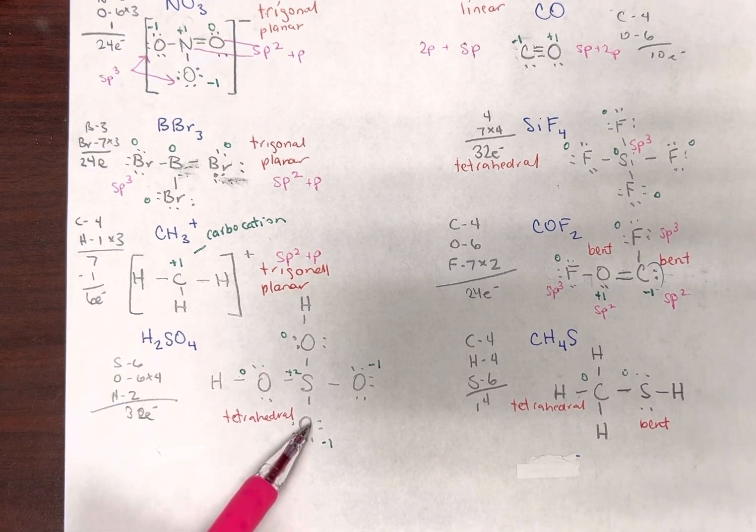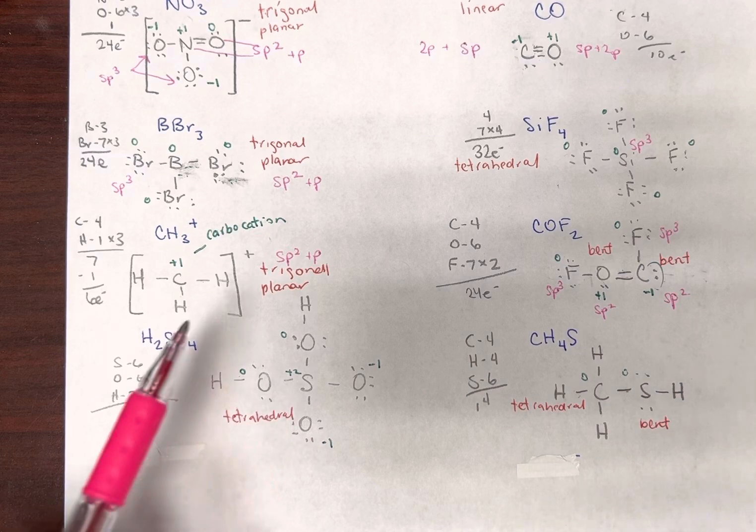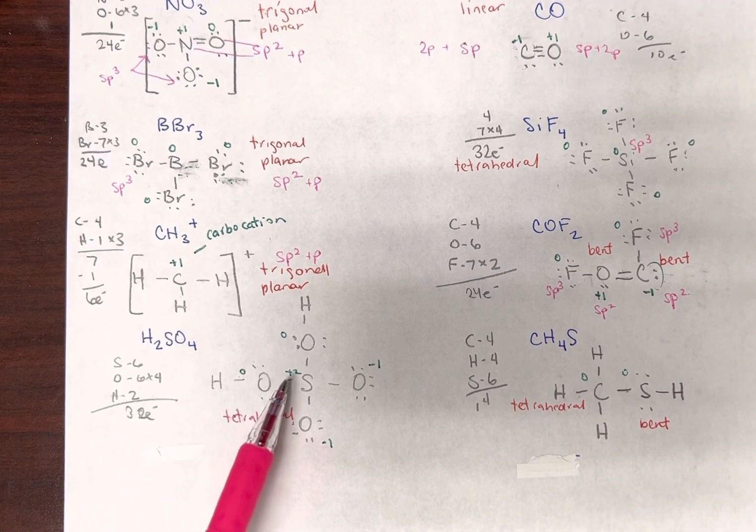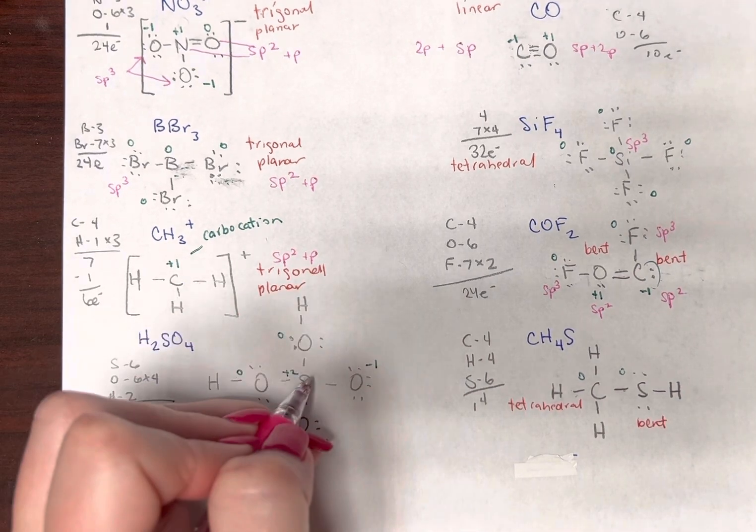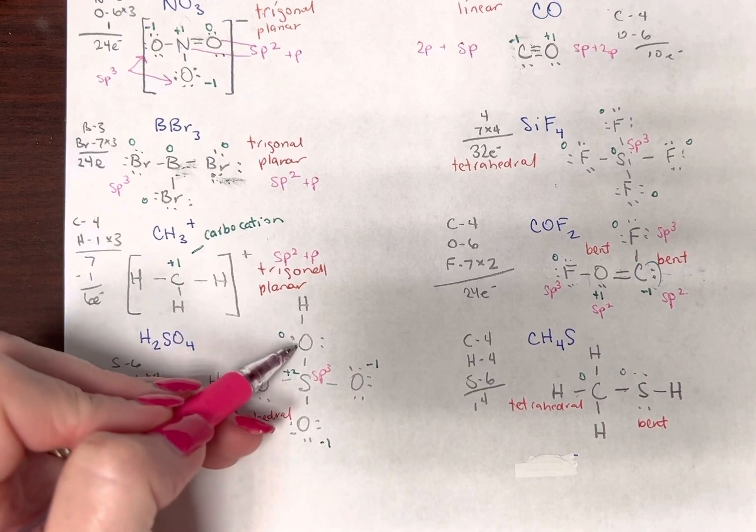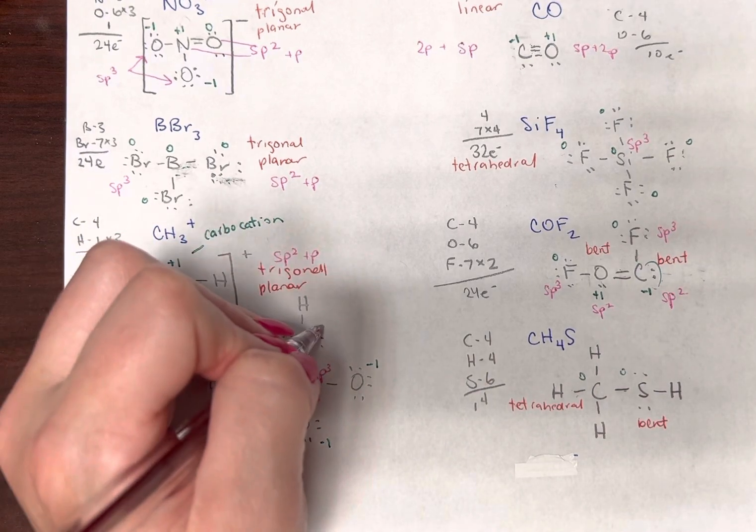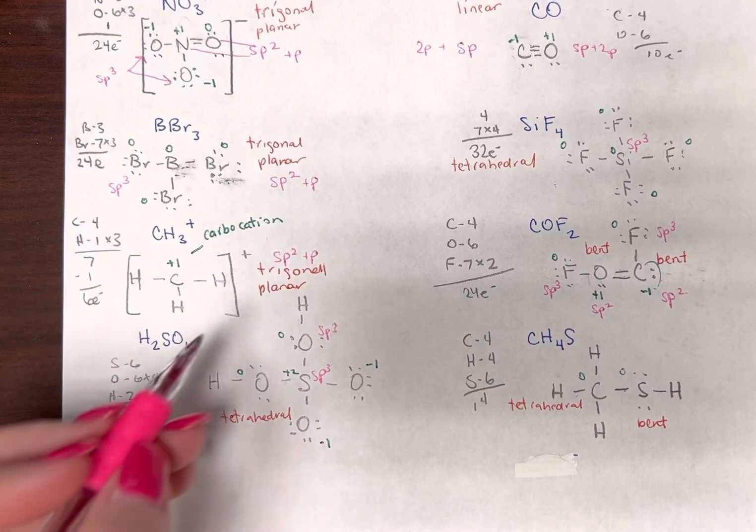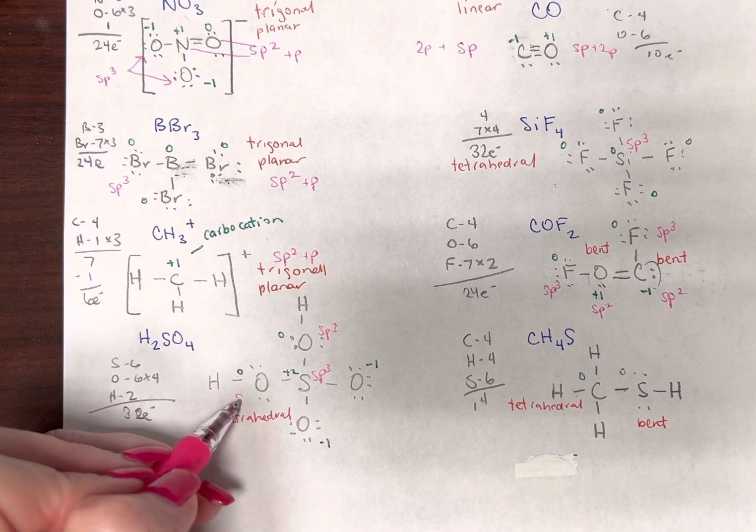Now, this acid, we don't really have to worry a whole lot about it, but let's just do a little practice. It has one, two, three, four friends. Sp3. Oxygen, one, two, three, four friends. Everything should be sp3 here. Hydrogen, we don't worry about.